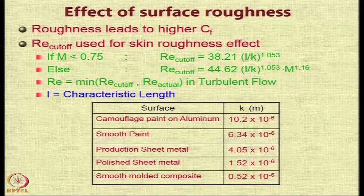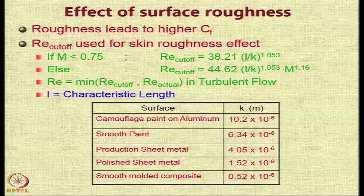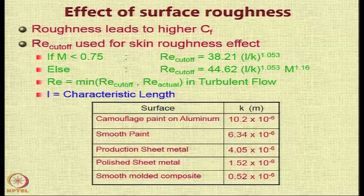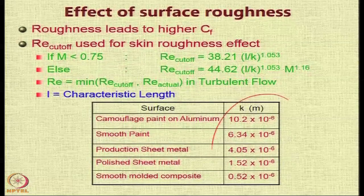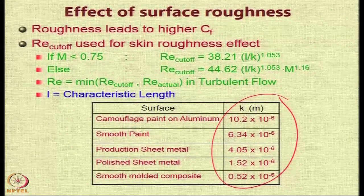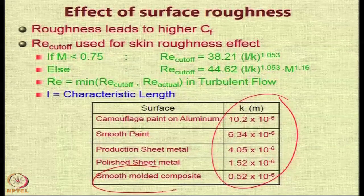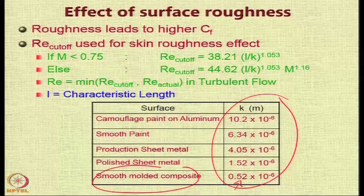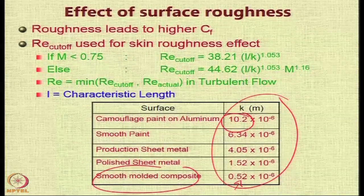You calculate the cutoff Reynolds number, and if it is lower than the actual Reynolds number, you use that number in the formula to get the required CF value. If the surface roughness value is unknown, characteristic values are provided for typical surface types. The lowest surface roughness is for smooth molded composite at 0.52×10⁻⁶, whereas camouflage paint on aluminium has nearly 20 times more surface roughness — a huge difference in the calculation of CF.